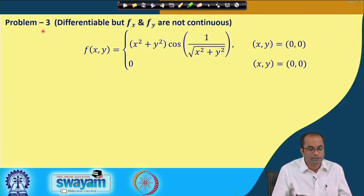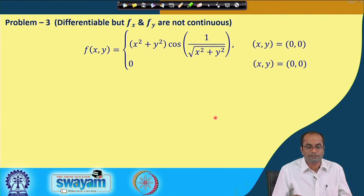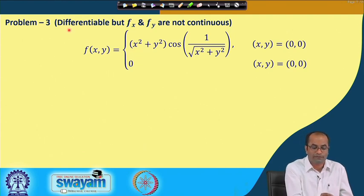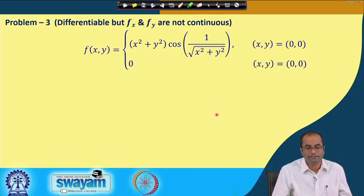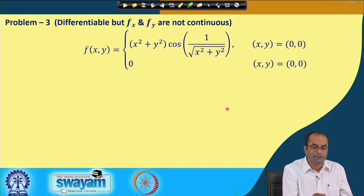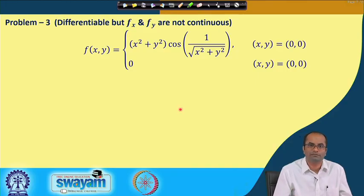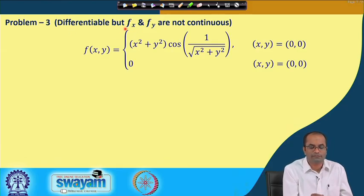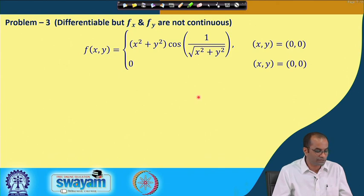In the next problem we show that the function is differentiable, but fₓ and f_y are not continuous. Recall that continuity of partial derivatives is sufficient for differentiability — not necessary. If we can prove fₓ and f_y are continuous, that implies differentiability; but if we cannot prove their continuity, we cannot conclude anything about the differentiability of f.